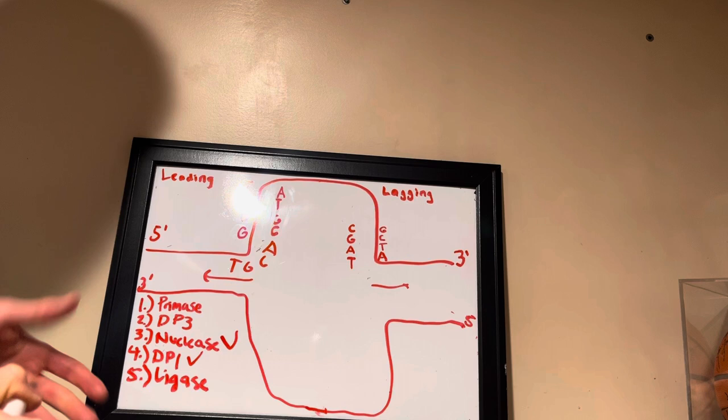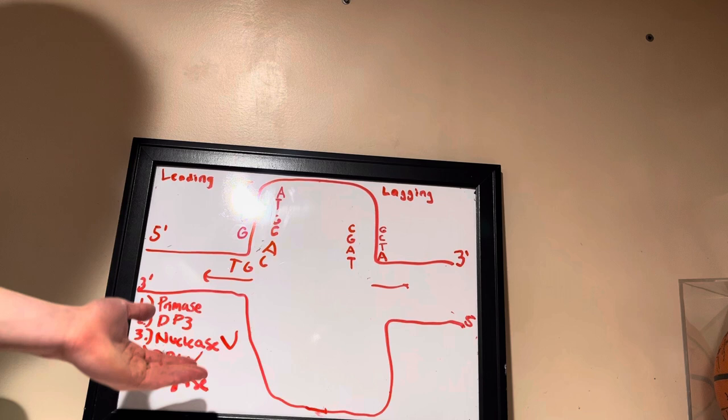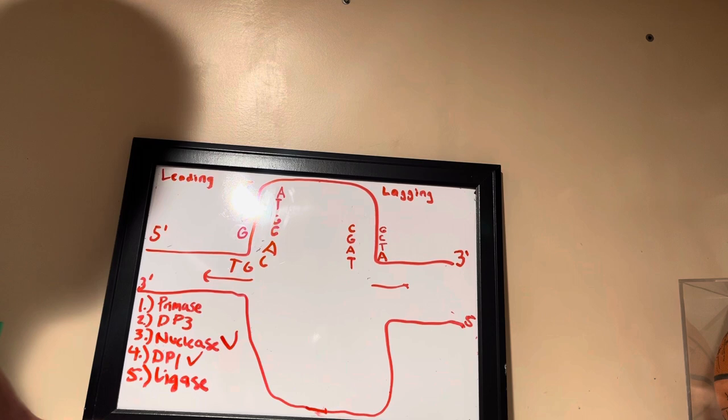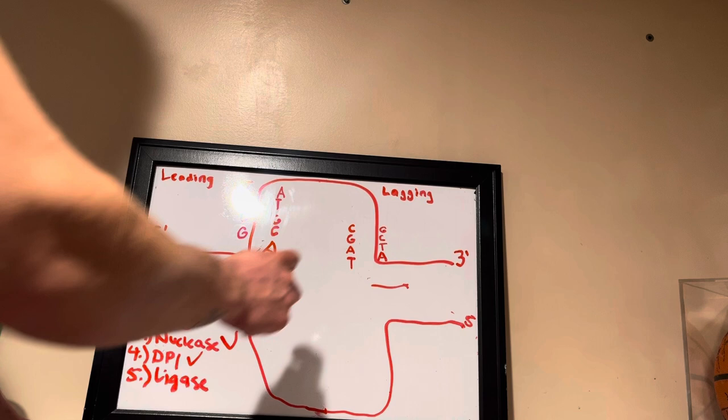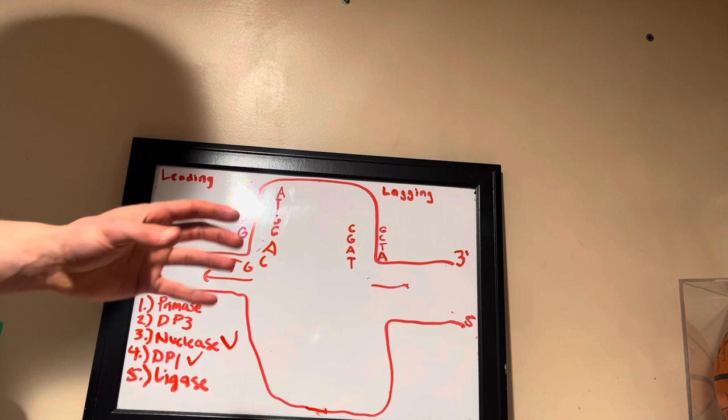So these two steps, three and four, are really just proofreading mechanisms. And then on top of that, nuclease will remove the RNA primers. Now the last step is ligase. Ligase is going to tie all the nucleotides together.